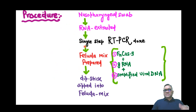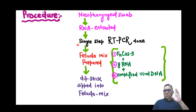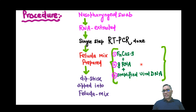The procedure of the Feluda test: as usual for COVID-19, the sample is taken from the nasopharyngeal swab. RNA is extracted. There is a single-step RT-PCR — that is, reverse transcriptase PCR — used to convert the viral RNA into viral DNA, since these are RNA viruses. This produces amplified viral DNA.